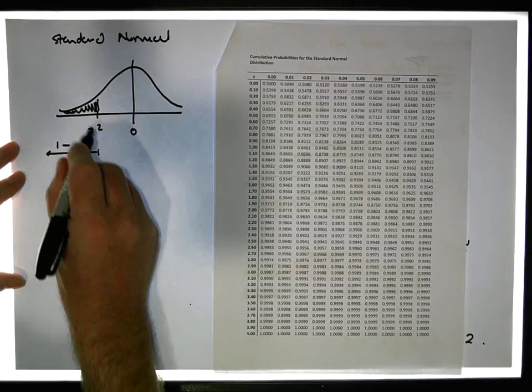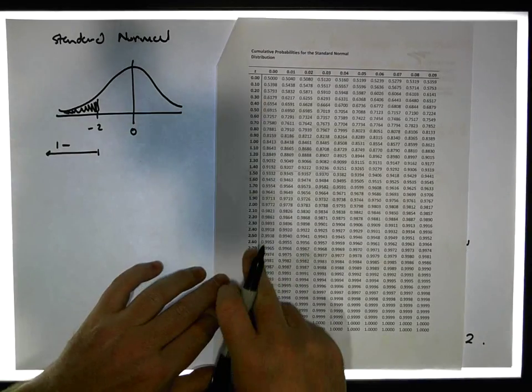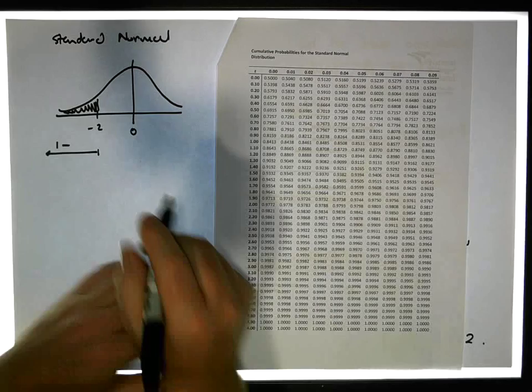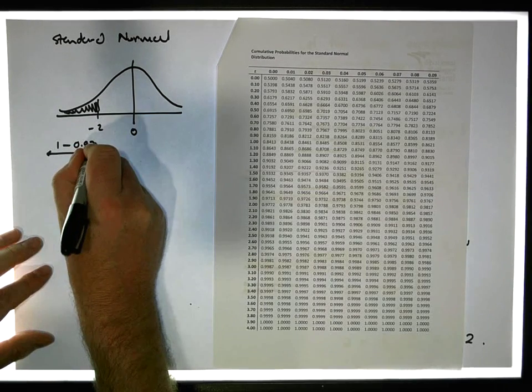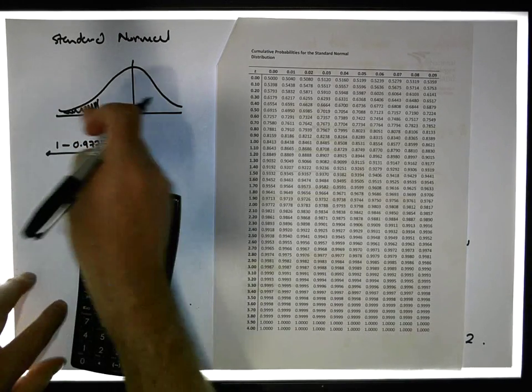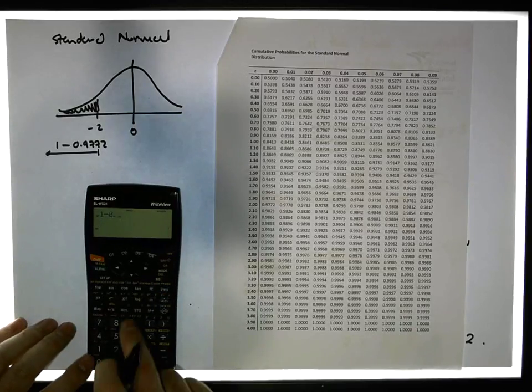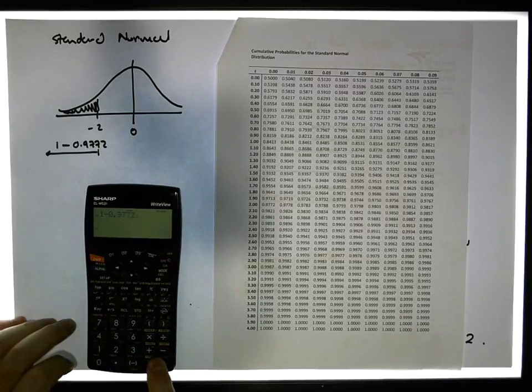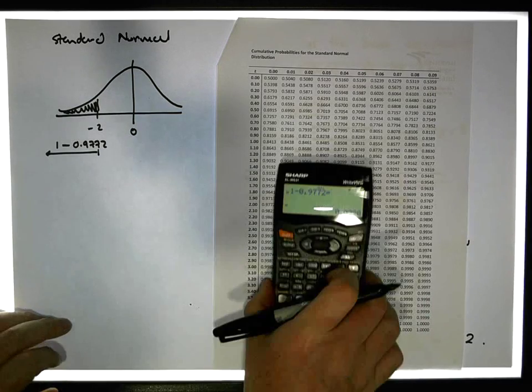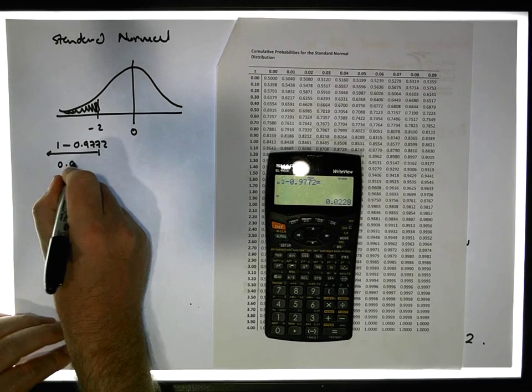So it's going to be one minus... I'm going to look up 2 on my tables, 2 is 0.9772, which means that the area in the left-hand part of the tail is one minus 0.9772, which gives us a value of 0.0228.